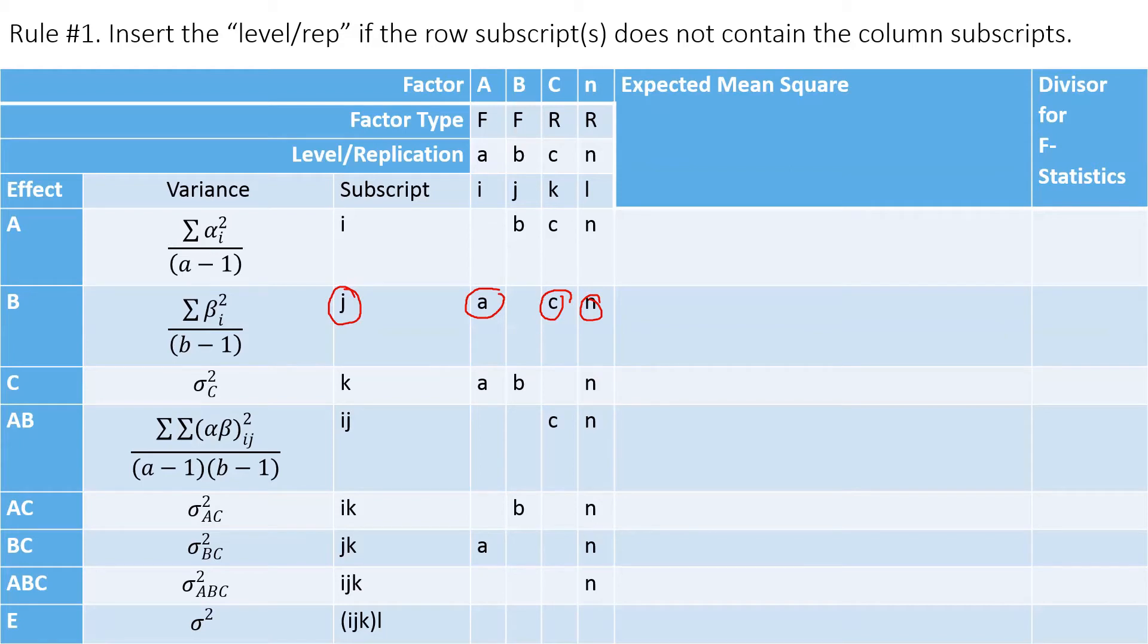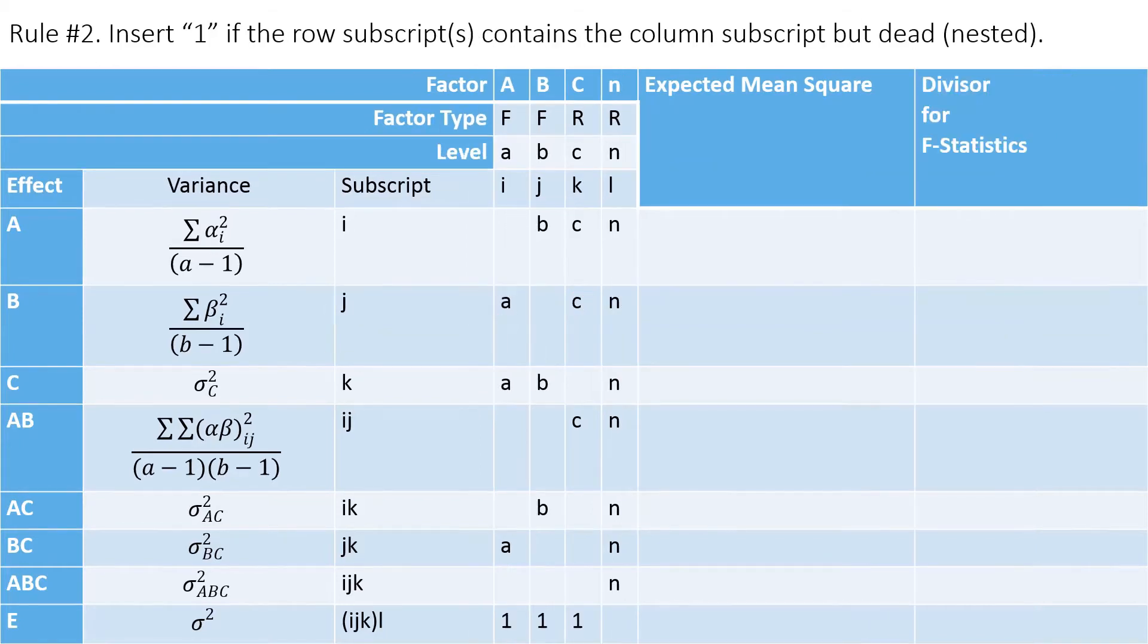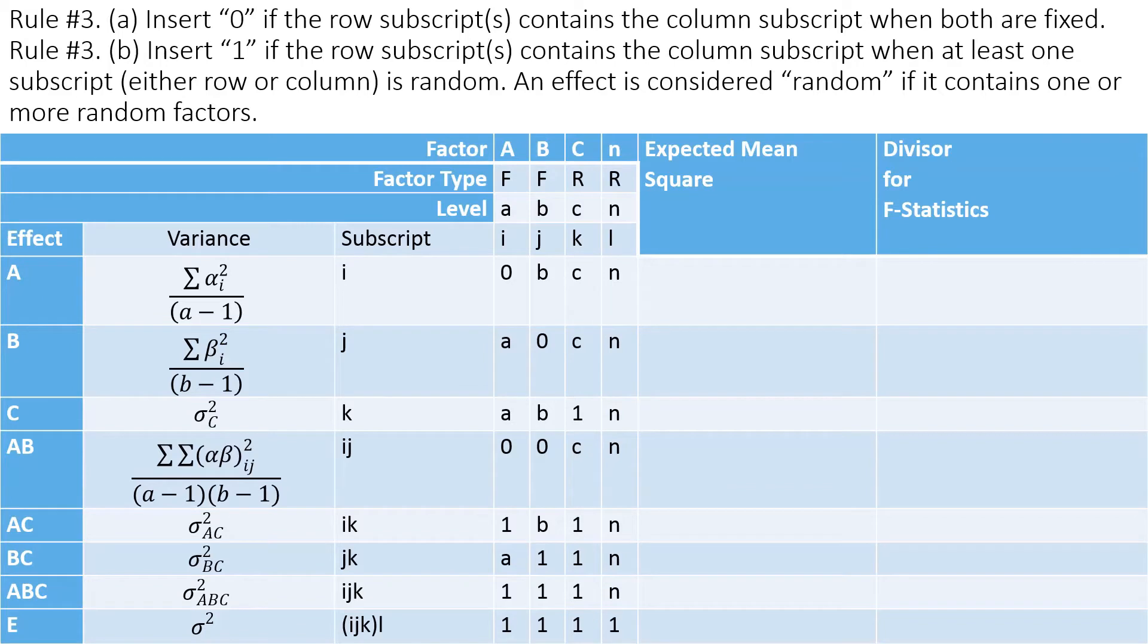You can always go back to the first video series of this expected mean square to see some details. Now if it's a nested factor or a dead subscript like this, then you type 1, 1, 1 if it matches. And then you type 0 if the row subscript contains the column. If it's a fixed factor, then type 0. If it's a random factor, then type 1.